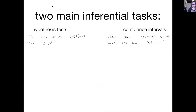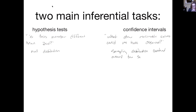Each of these inferential tasks is going to use a sampling distribution to answer the question. A hypothesis test is going to use a null distribution, and a confidence interval is going to use a sampling distribution centered around the sample statistic. The null distribution is a sampling distribution centered around the null value — we just have a special word for it. We don't have a special word for the sampling distribution centered around the sample statistic.